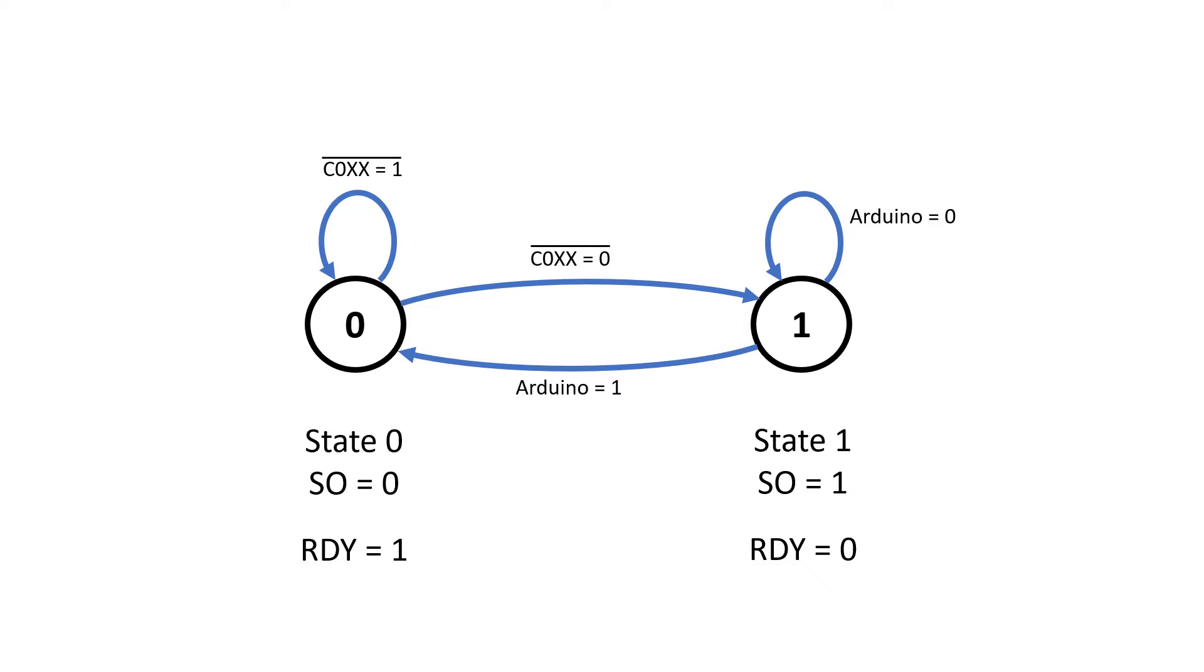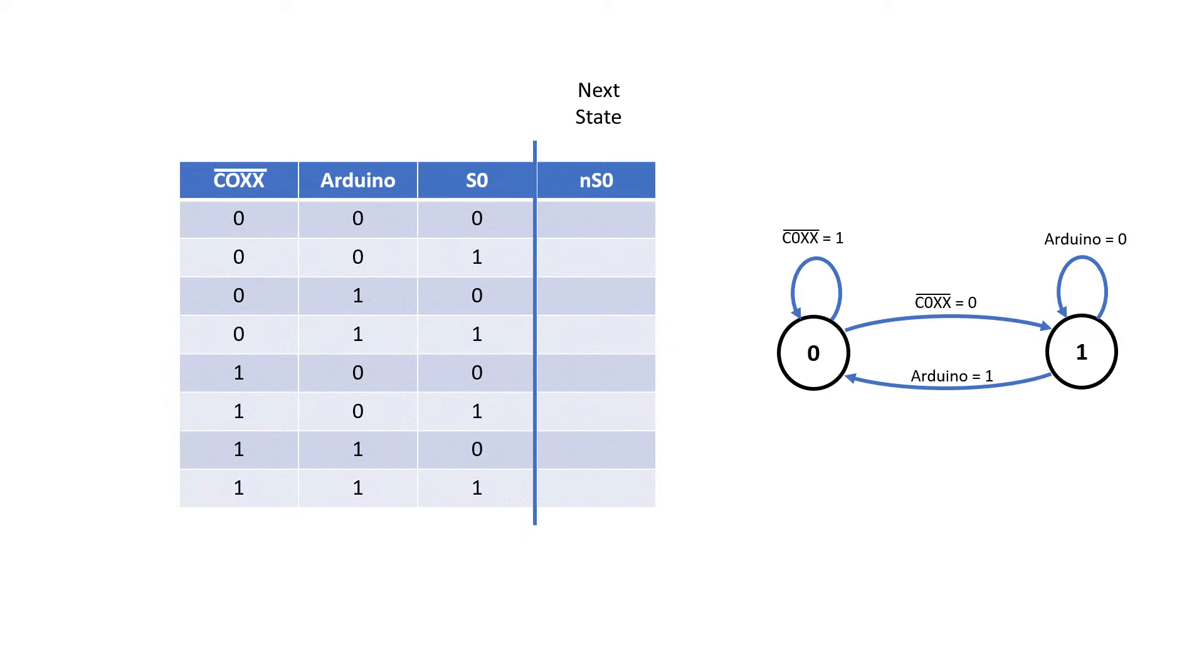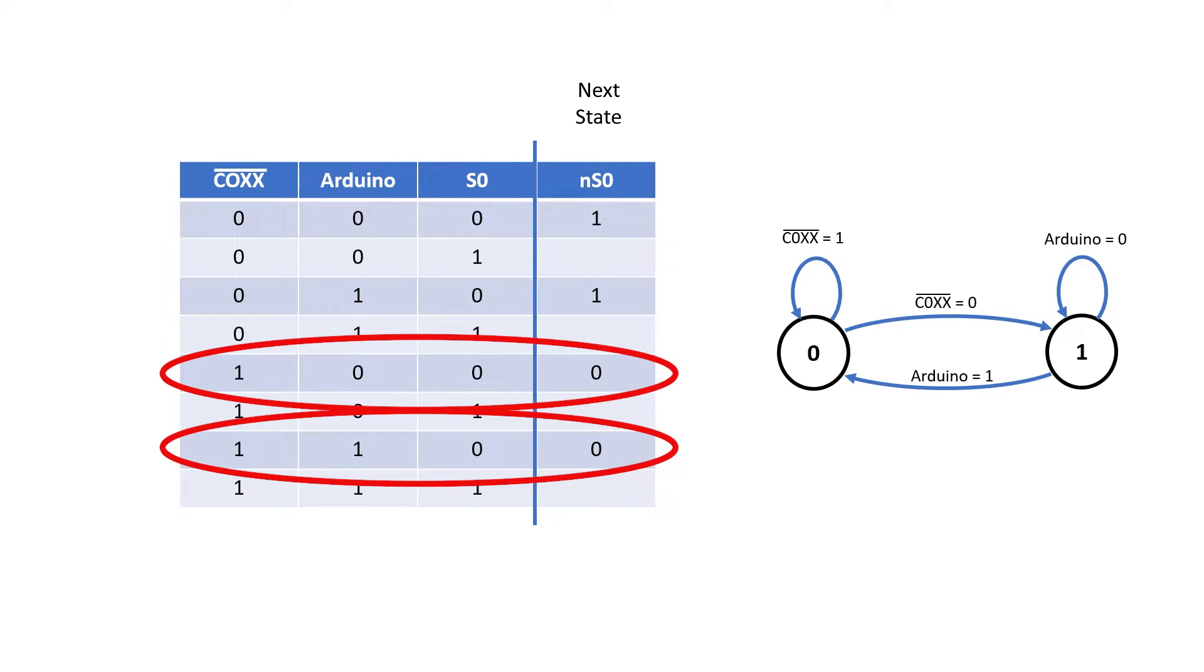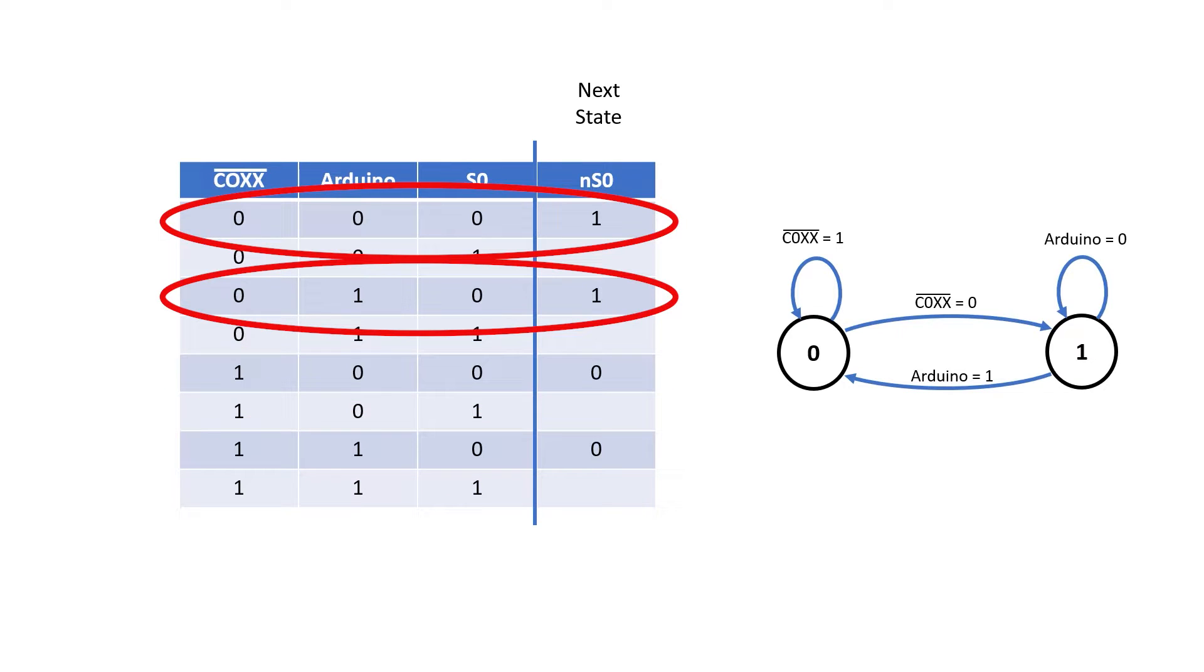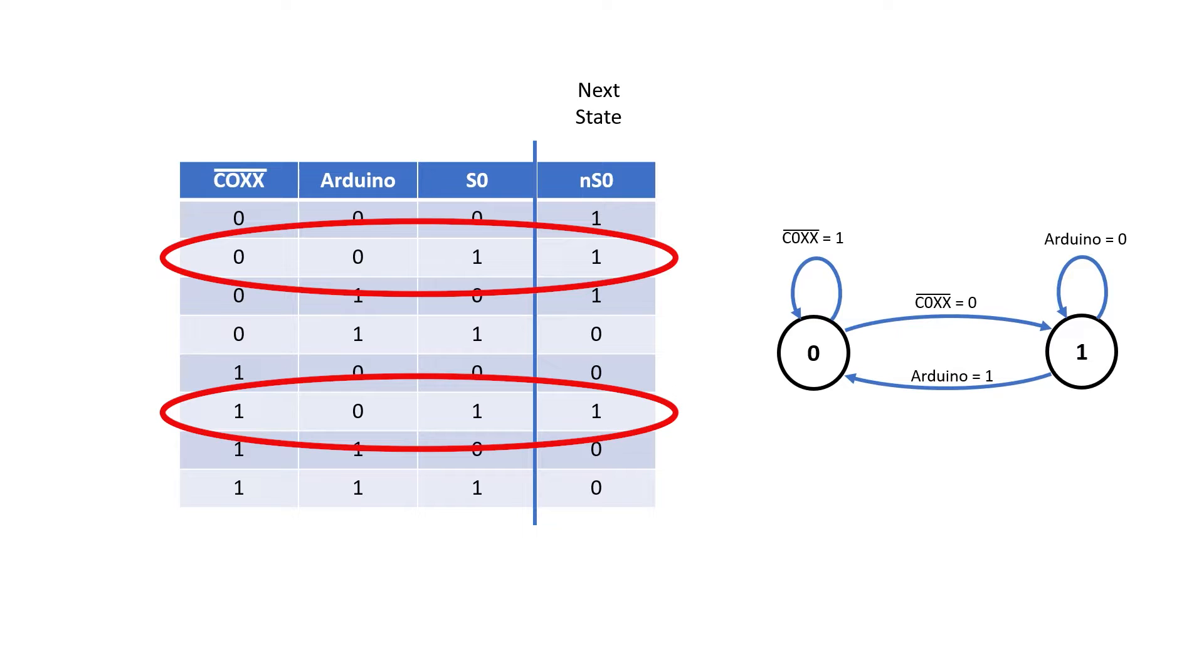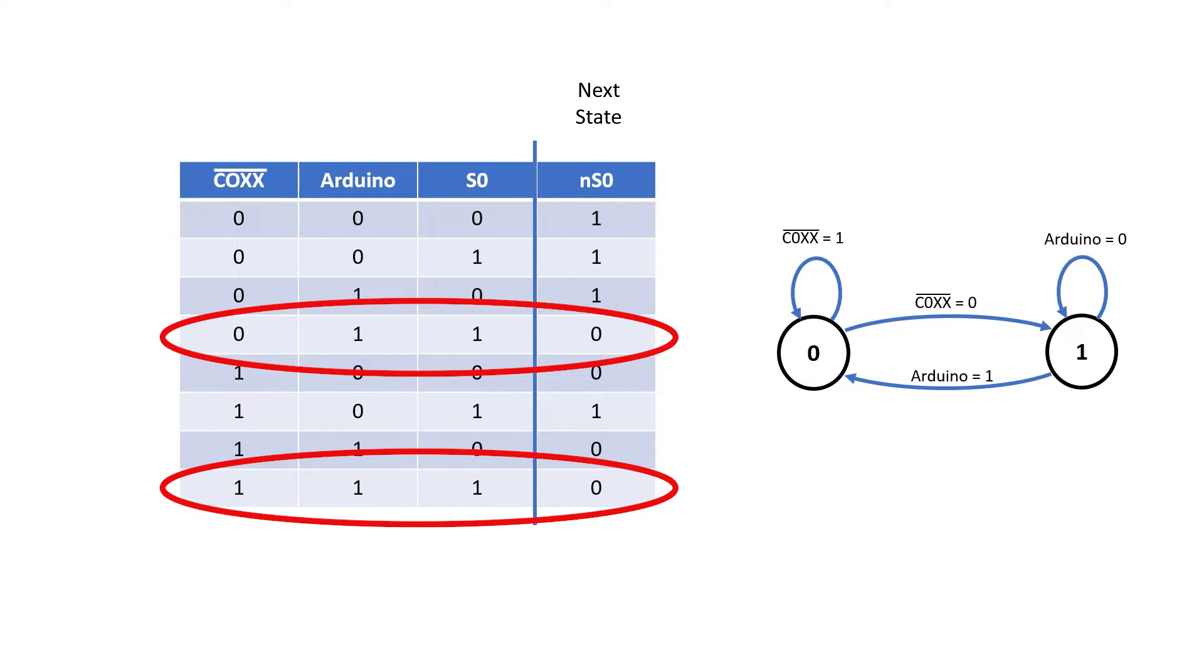I'm going to call S0 my current state, and S0 bar is actually the ready signal. Given our C1000 signal, our signal from the Arduino and our current state, we can compute what the next state should be. In state 0, if C1000 signal is high, then we stay in state 0. Otherwise, if the C1000 signal is low, we go to state 1. Then in state 1, if the Arduino signal is low, we stay in state 1. But when the Arduino signal goes high, we go back to state 0.